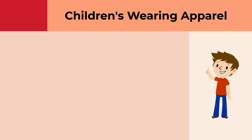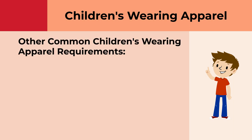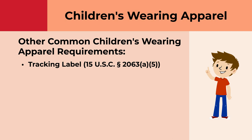Although not part of the requirements for Part 1610, there are other common requirements that may apply to children's wearing apparel. Children's products and their packaging are required to have tracking labels — a permanent mark affixed to the product and packaging providing identifying information including the manufacturer, importer, and/or private labeler, date and location of production, and batch code or cohort information. To learn more, watch CPSC's tracking label requirement video at youtube.com/uscpsc.